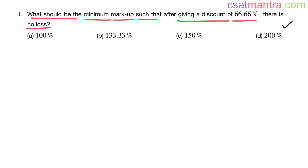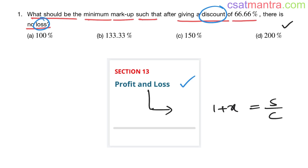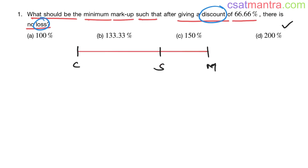In this question you have the terms loss and discount, so this question is based on Profit and Loss. In this chapter we have only one formula: 1 + x = s/c. This is the only formula you have to think in terms of, my friends.